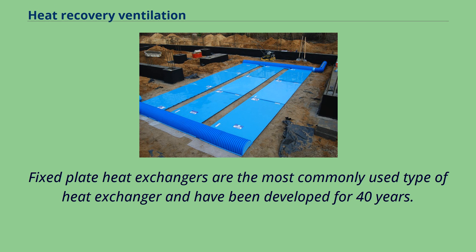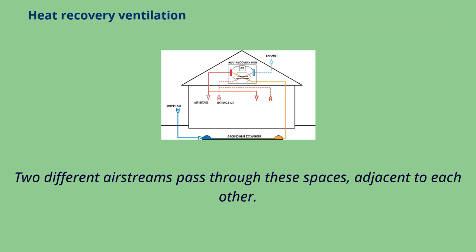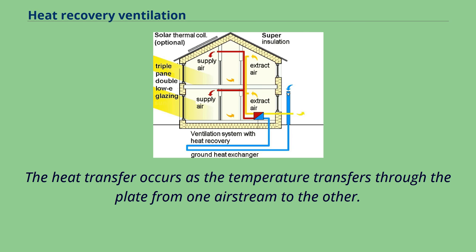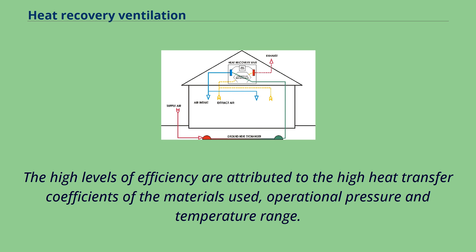Fixed plate heat exchangers are the most commonly used type of heat exchanger and have been developed for 40 years. Thin metal plates are stacked with a small spacing between plates, and two different air streams pass through these spaces adjacent to each other. Heat transfer occurs as temperature transfers through the plate from one air stream to the other. These devices have shown 90% sensible heat efficiency, attributed to high heat transfer coefficients of the materials used, and their operational pressure and temperature range.